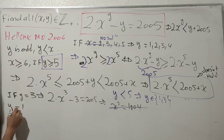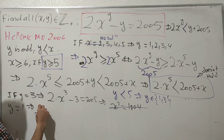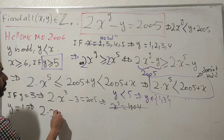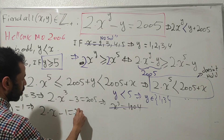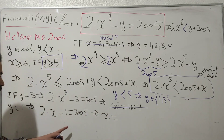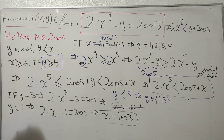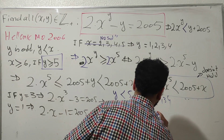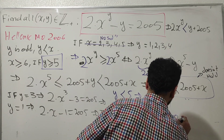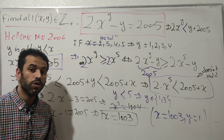Now try y = 1: replacing y = 1 into the equation gives 2·x − 1 = 2005, so 2·x = 2006, and x = 1003. This works. Therefore the only solution to this equation is x = 1003, y = 1.